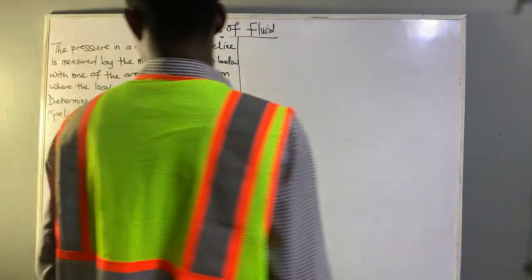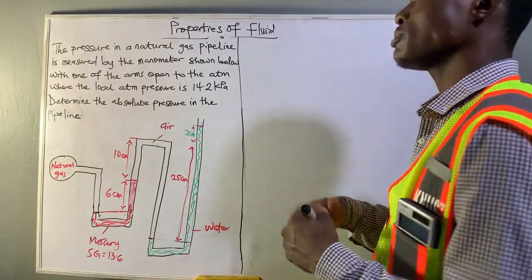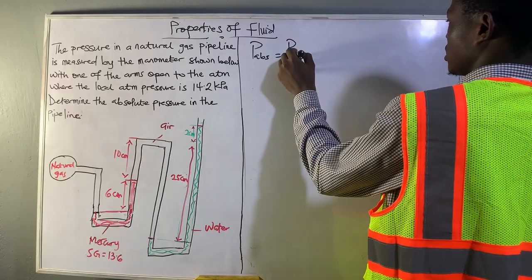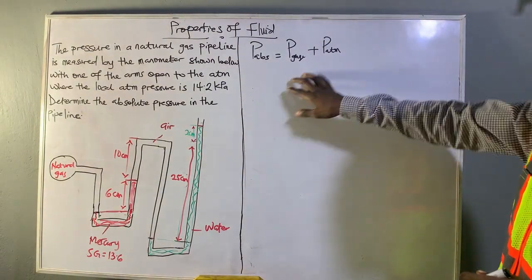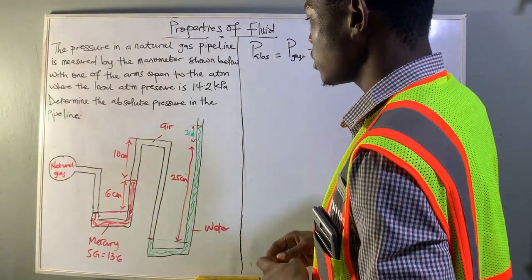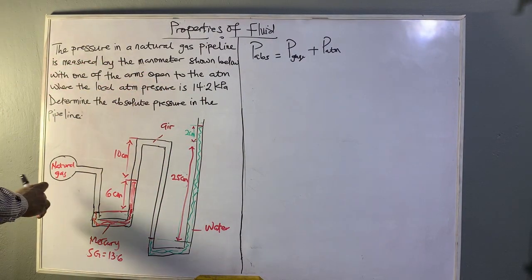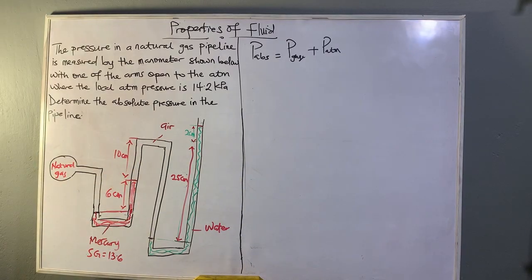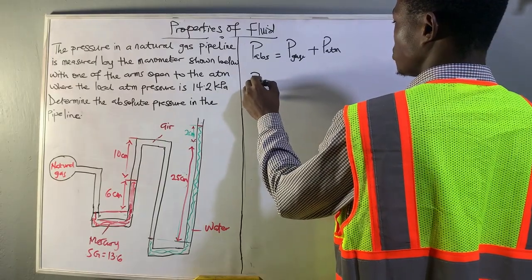To solve for absolute pressure in a pipeline, we know that absolute pressure is equal to gauge pressure plus atmospheric pressure. Note this before we start answering. In this figure we can see there are about four components: the natural gas, mercury, air, and water. We also write the formula for pressure of a fluid, which is rho times g times h.